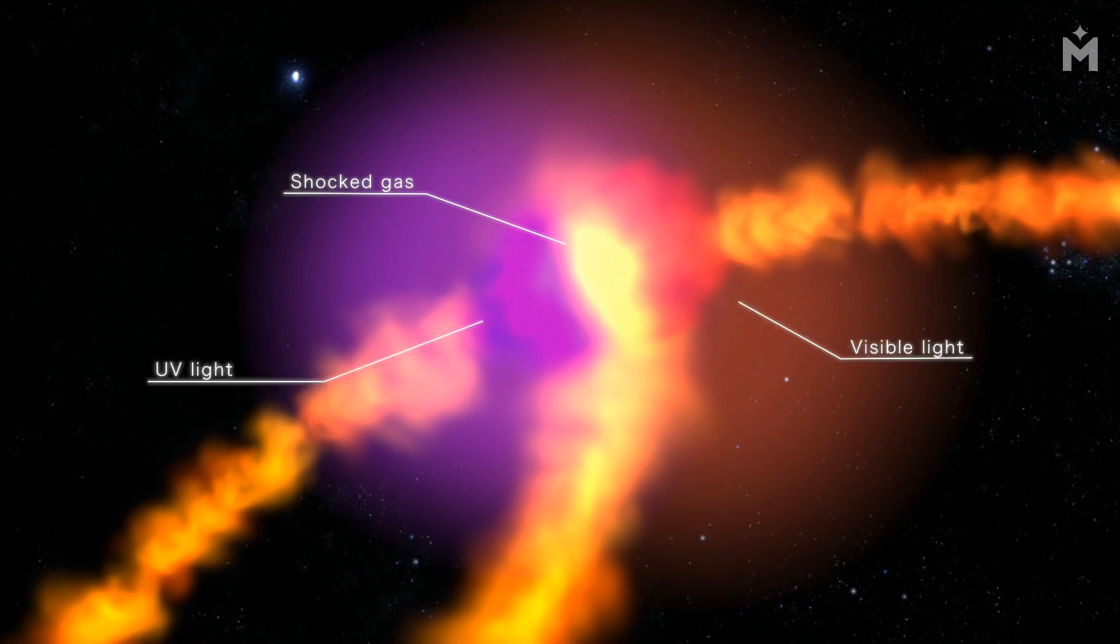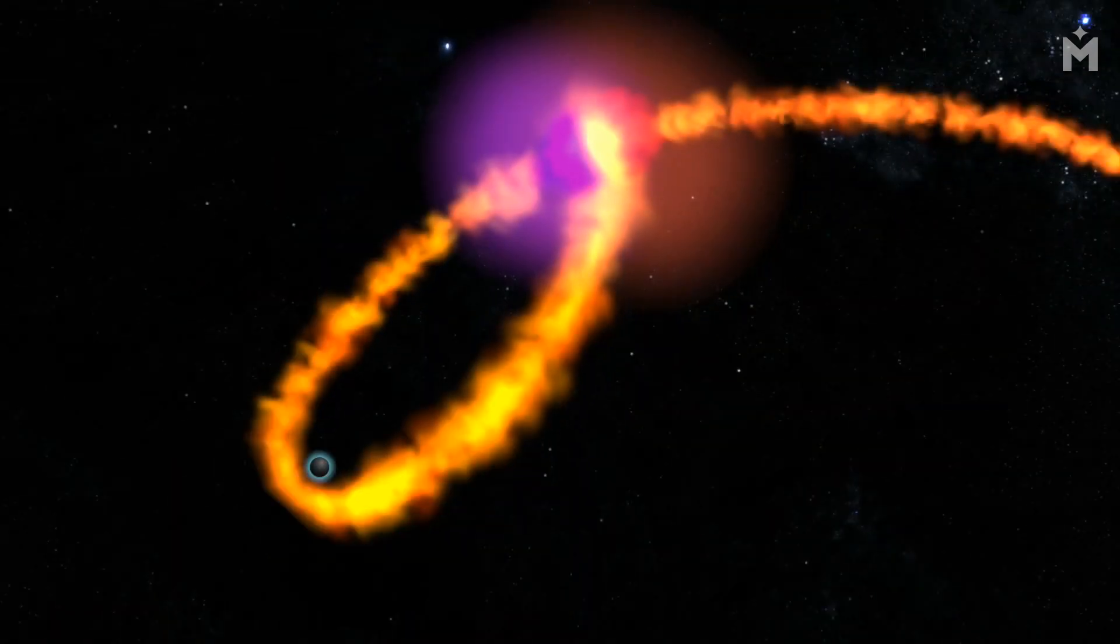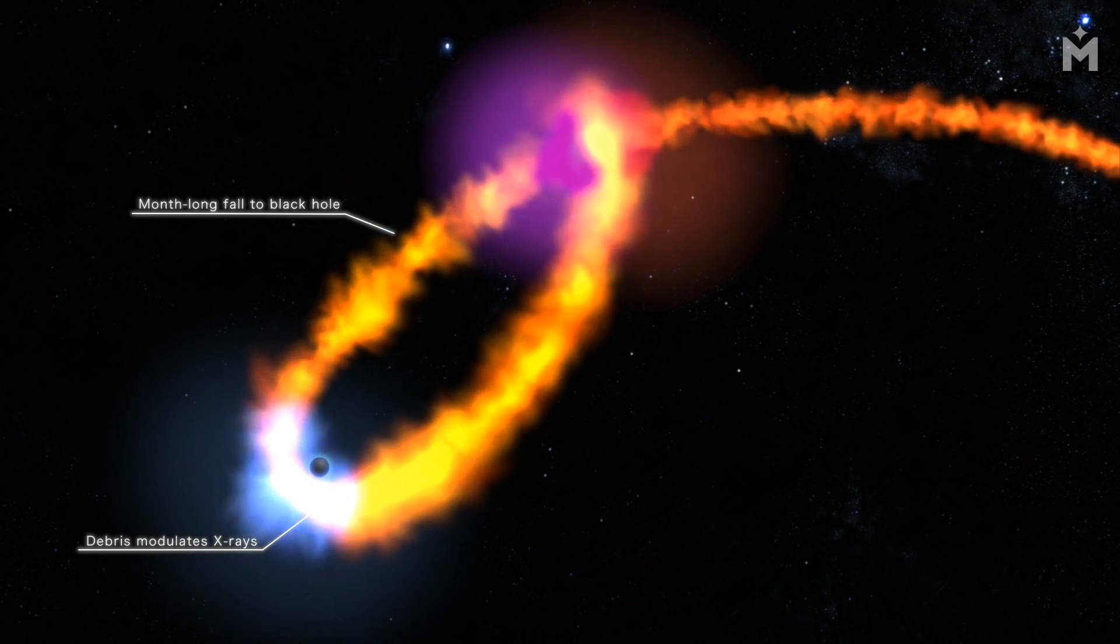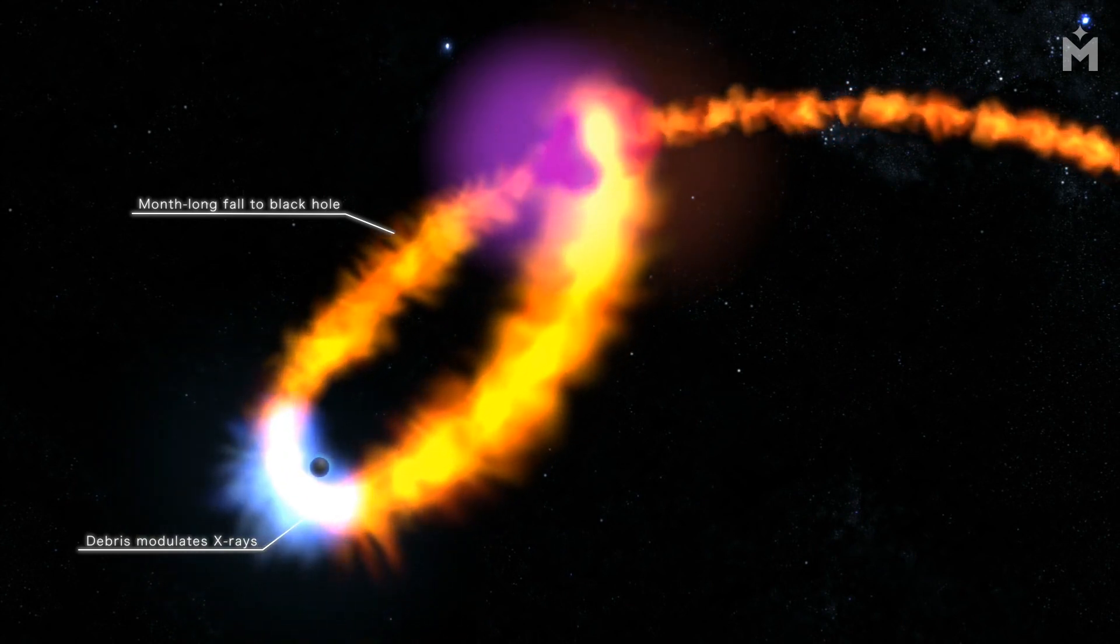If the star is torn apart close to a planet, then the planet can be pulled into the black hole as well. This can cause all sorts of havoc, including the destruction of the planet and the death of any life on it.